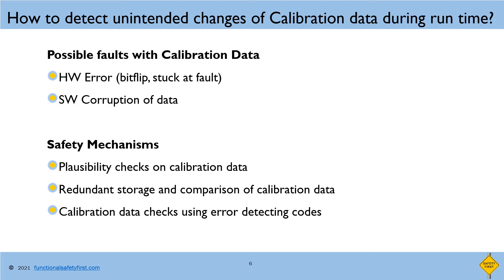Redundant storage can be implemented using double buffering, triple buffering, or even quadruple buffering, wherein having more redundant copies helps not only to detect but also to correct corrupted calibration data. Number three, the data can be protected using ECC software or hardware. 1-bit correction and 2-bit error detection is available in most memory hardware. However, note that hardware ECC can only detect or correct hardware faults, and a different mechanism must additionally be implemented to prevent software interferences that lead to corruption of calibration data.